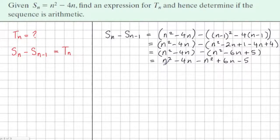Now we see we have an n squared and a minus n squared. And we have 6n take 4n, that gives us 2n. And we have minus 5. So that's what term n is: 2n minus 5. Now I'm just going to highlight that, because that's the important answer in the first part.